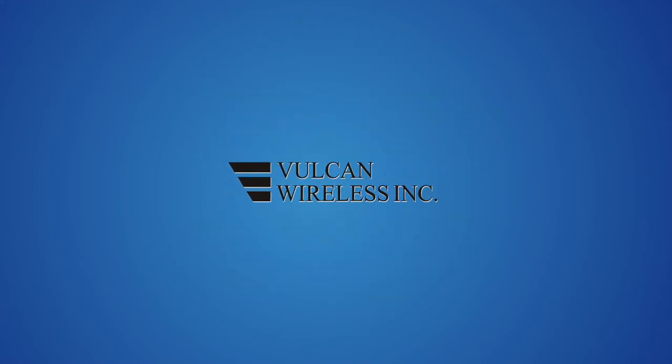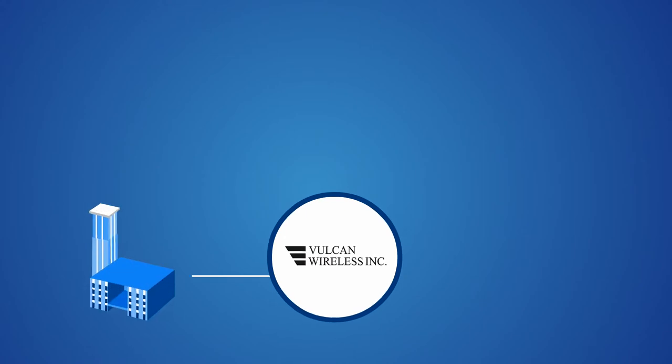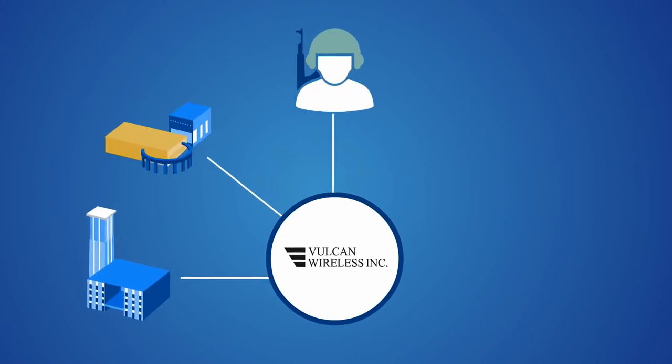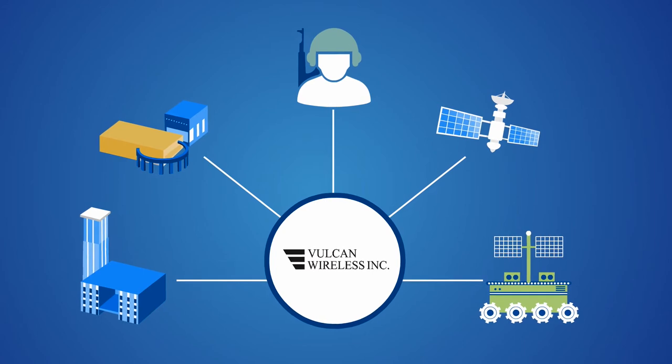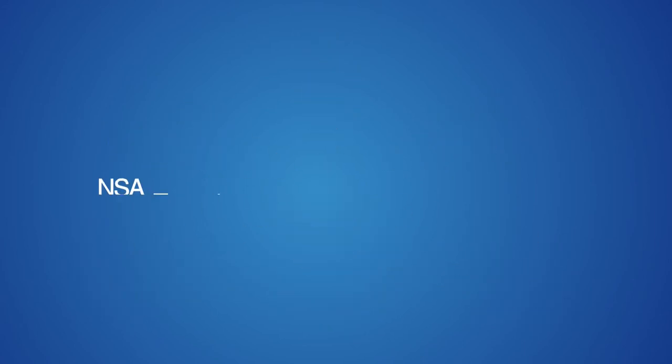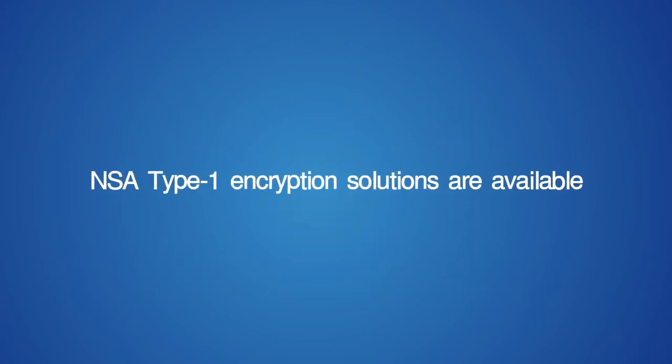Vulcan Wireless is a trusted end-to-end communication solution for commercial, NASA, and military missions, supporting a wide range of orbital inclinations and ground infrastructure. NSA Type 1 encryption solutions are available.